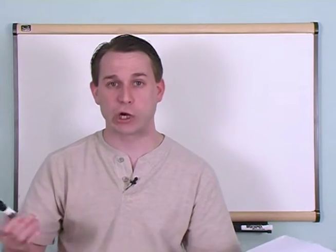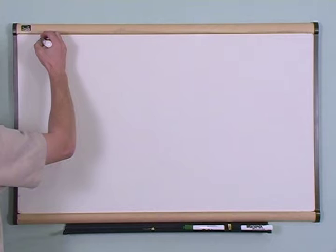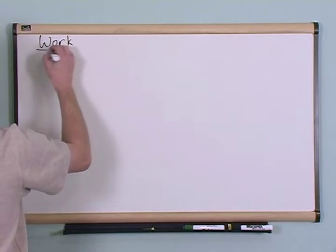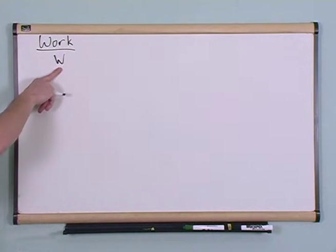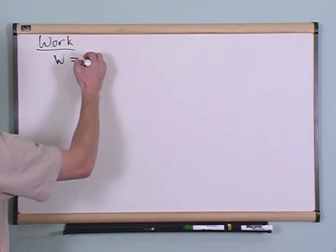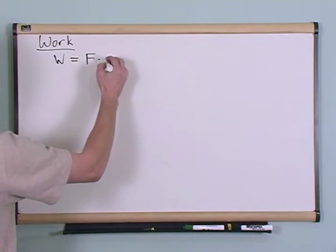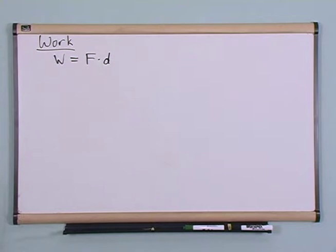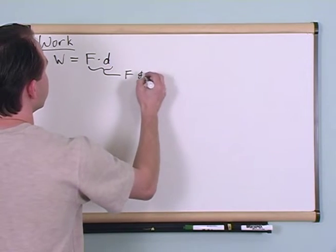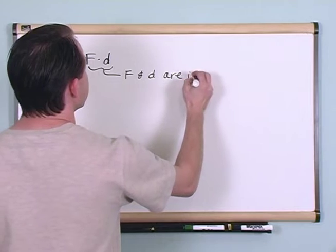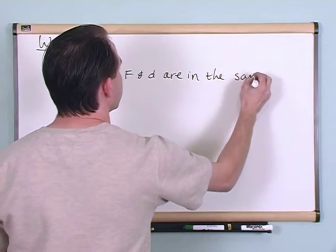In order to understand that, we need to talk about the definition of the term work. The work done on an object is equal to the force applied to the object times the distance traveled by the object, where F and D are in the same direction.